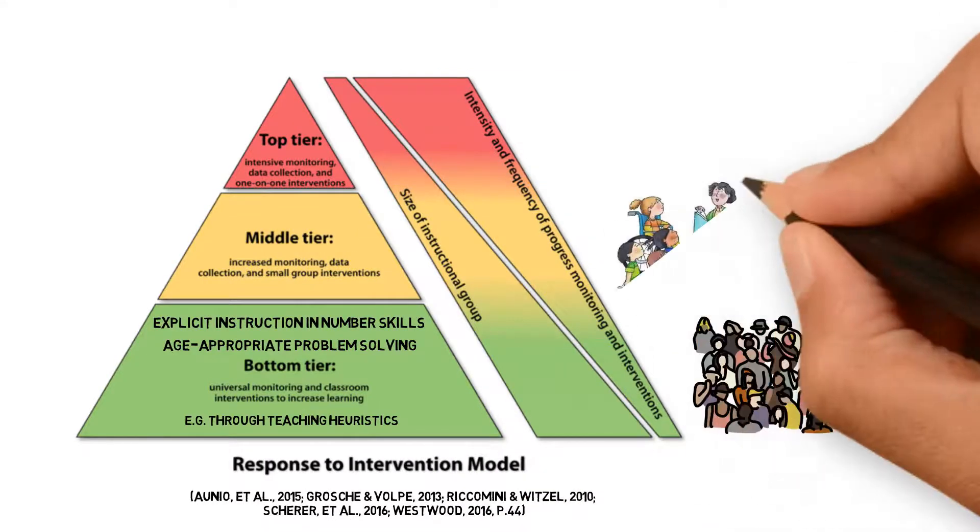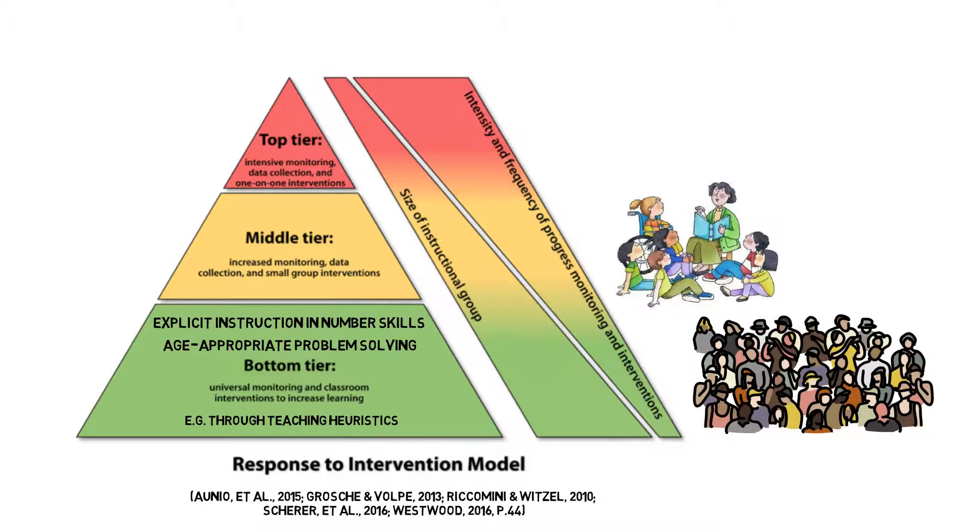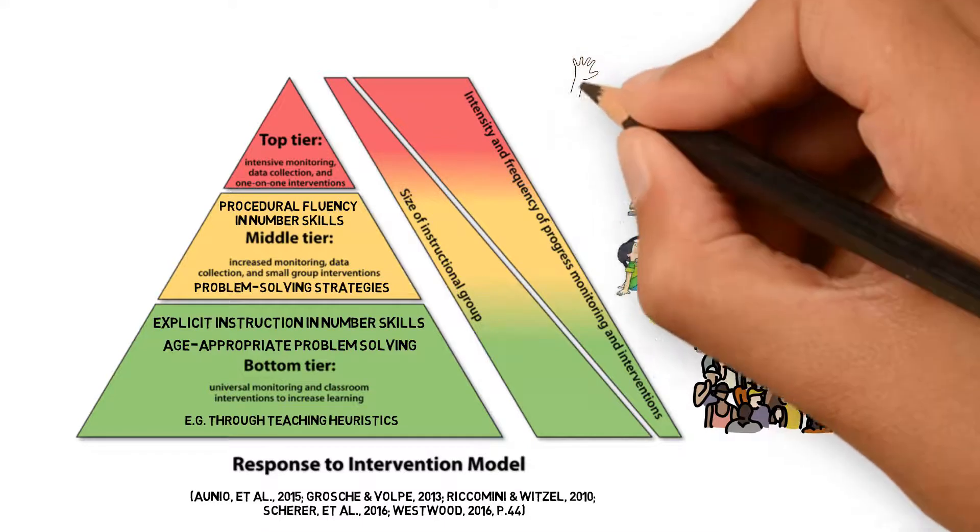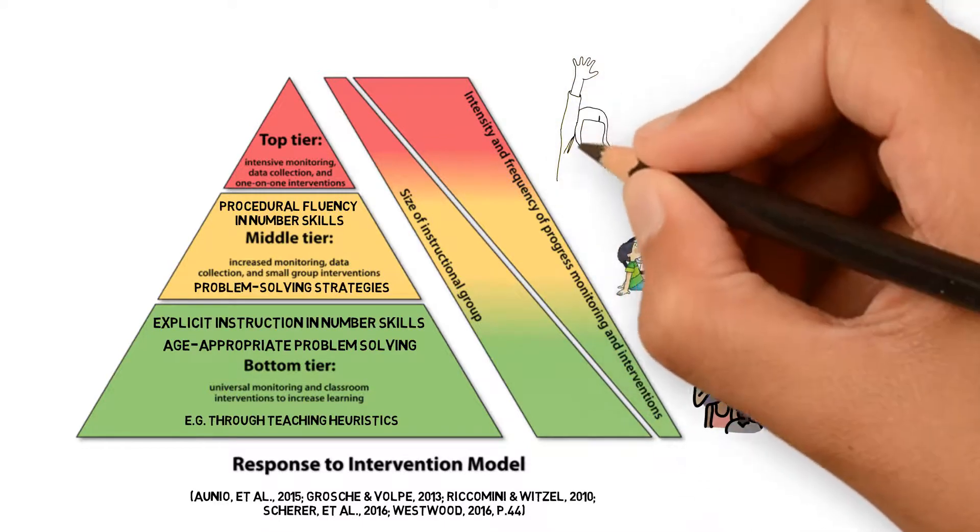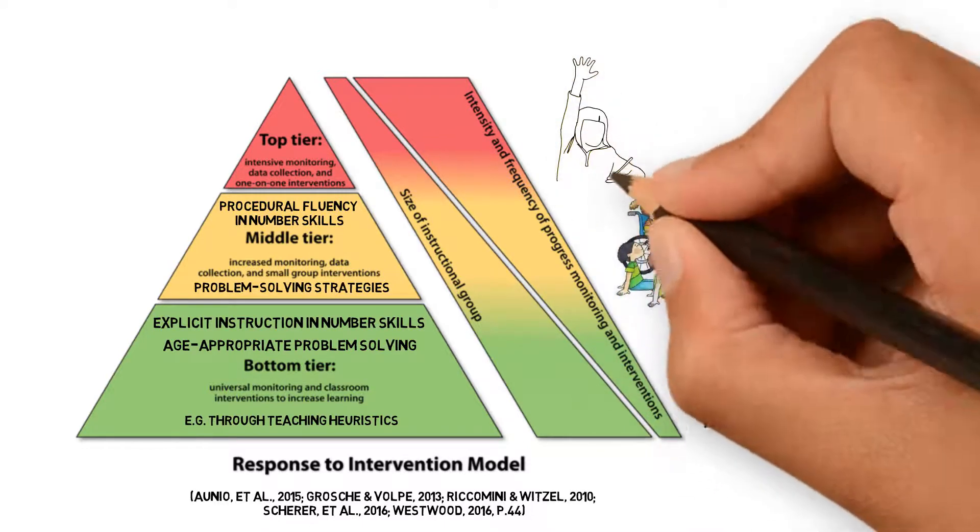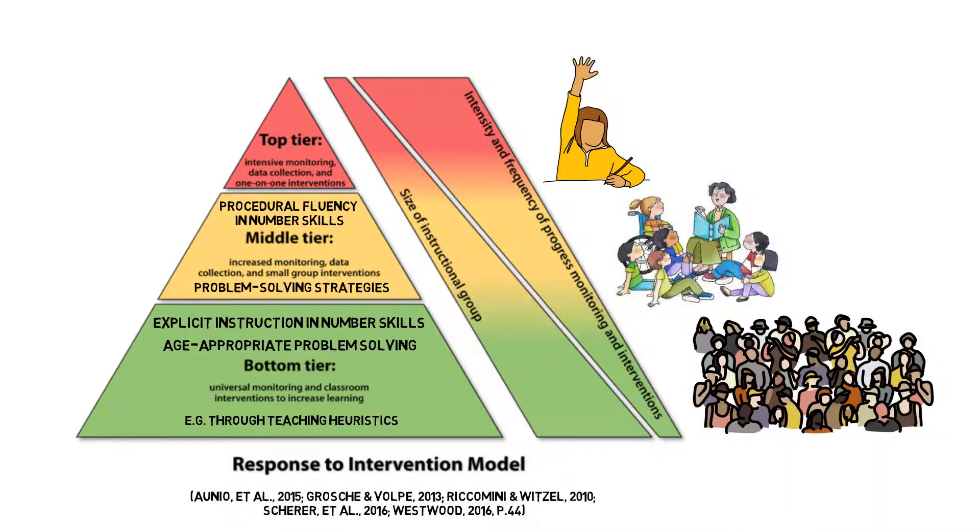Tier 2 is designed for students who require extra support in small groups, with a focus on developing procedural fluency in number skills and problem-solving strategies. If students show a significant learning difficulty and fail to respond at this stage, they move to Tier 3, where they receive in-depth assessment for more intensive one-on-one instruction.